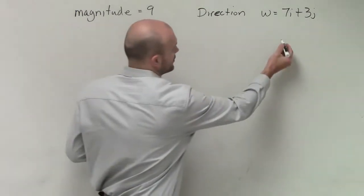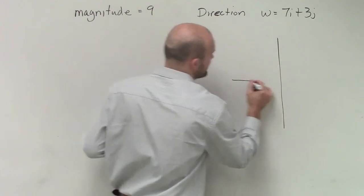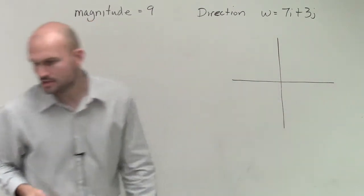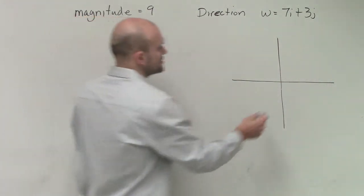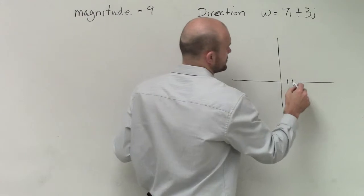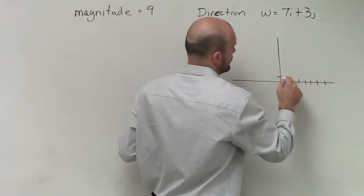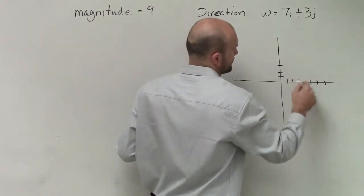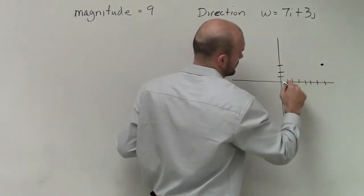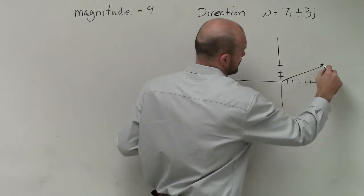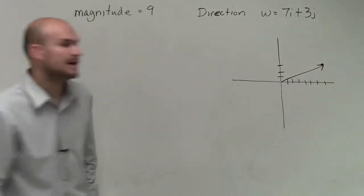Let's take a look at what this vector looks like. It's 7i plus 3j, so we go 1, 2, 3, 4, 5, 6, 7 in the i direction and 1, 2, 3 in the j direction. That's our vector w.